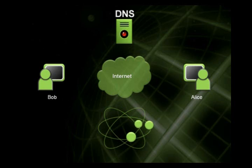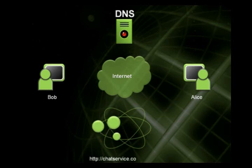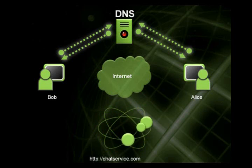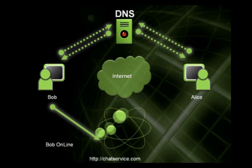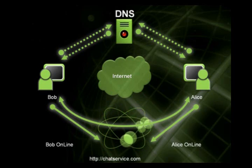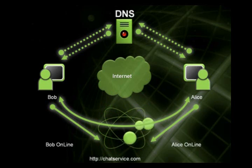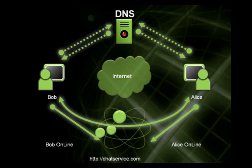So what you typically see happen for, let's take a chat application — when Bob wants to talk to Alice, there's going to be some intermediary at chatservice.com. Both participants will go to a DNS server, get the chat service address, connect up to it and announce they're online. Then they communicate through this relay — they're not talking to each other directly. Some services do provide the ability to eventually transition that connection to a direct connection between Bob and Alice, regardless of NATs and firewalls, and we'll talk about those scenarios in future screencasts.